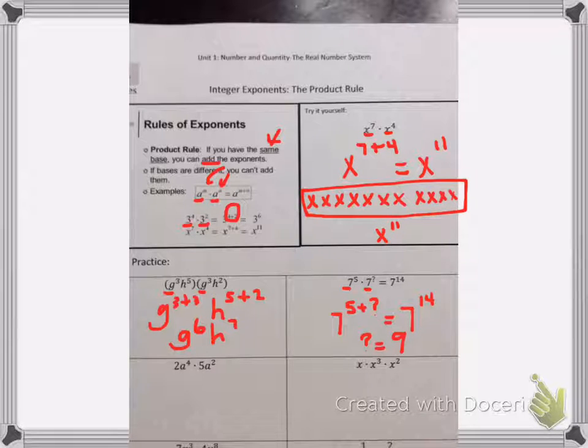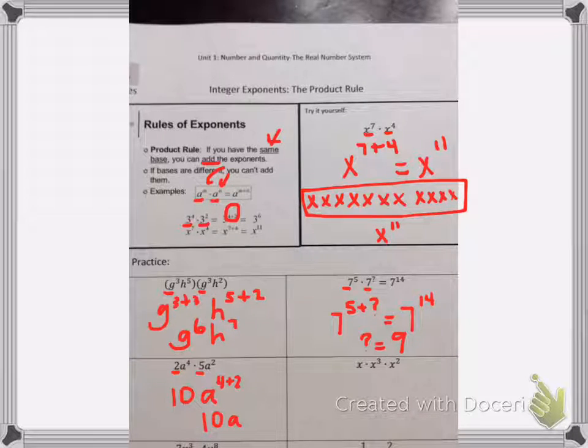On this next example right here, we've never shown you yet what to do if there's numbers out in front. Well this says two a to the fourth times five a squared. Two and five we've always been able to multiply together, so we're still just going to multiply them together. Two times five is ten, and then we're going to look at our powers. We'll have a to the four plus two, so we have ten a to the sixth for our final answer there.